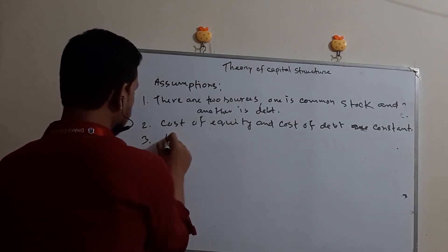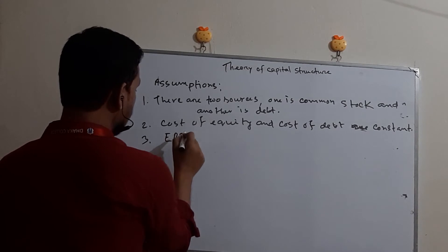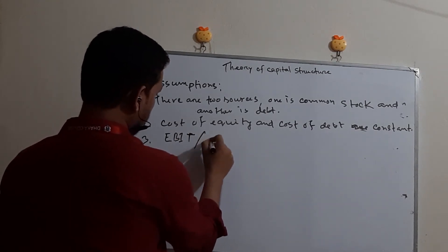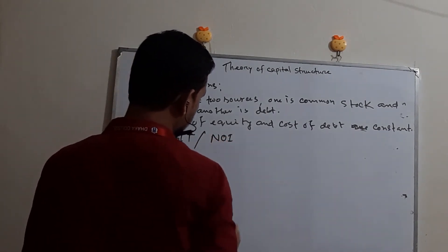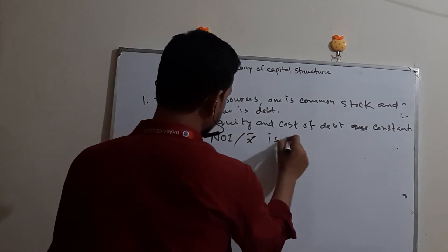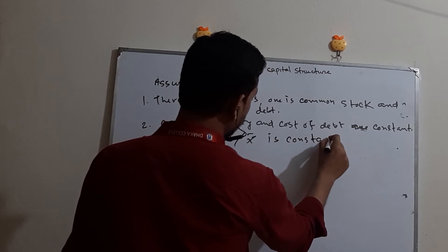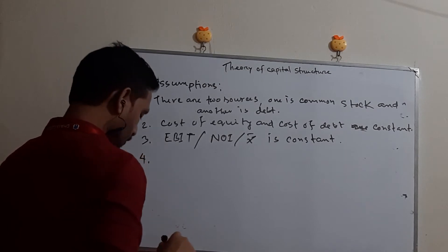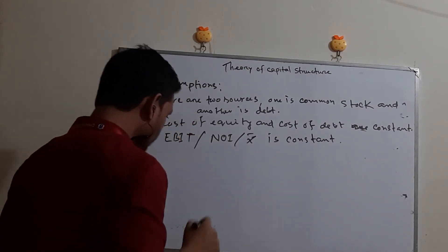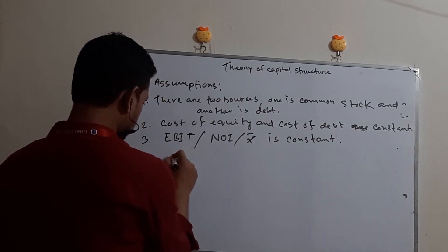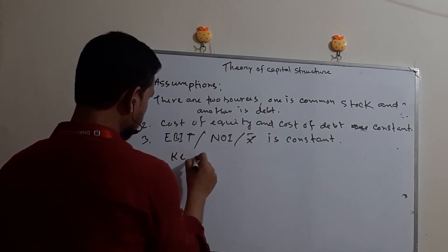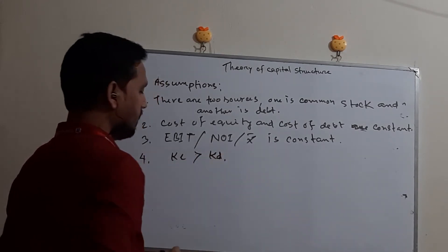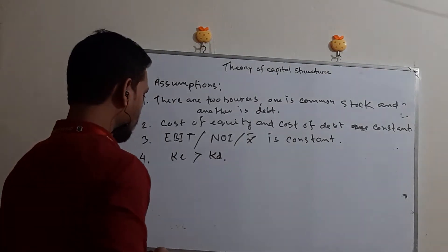The third assumption is that EBIT — earning before interest and tax — or NOI, net operating income, also called X-bar, is constant. The fourth assumption is that cost of equity (KE) is always greater than cost of debt (KD), that is KE is always greater than KD.